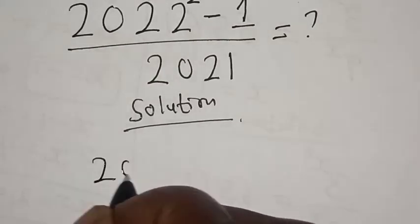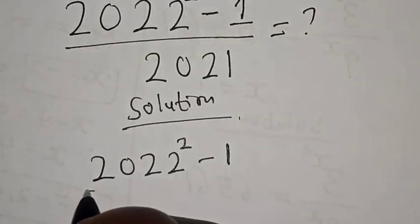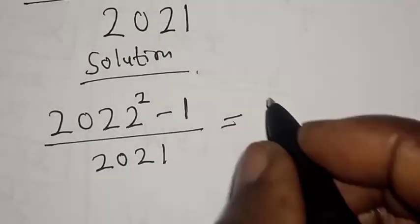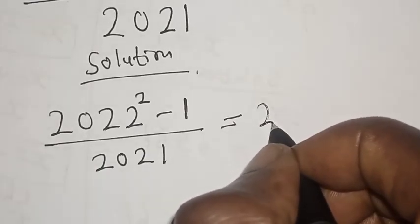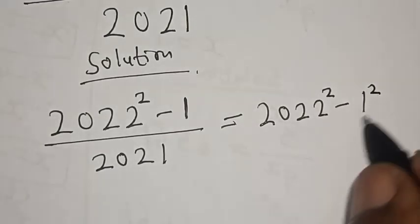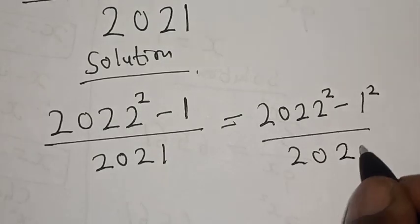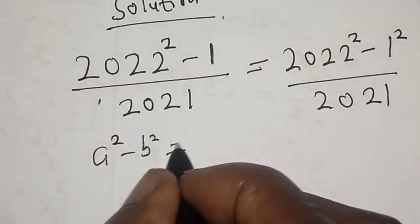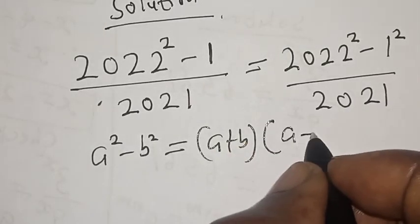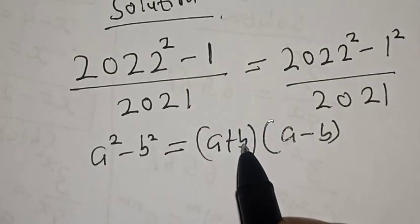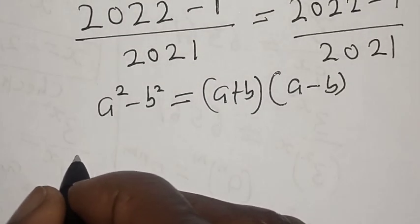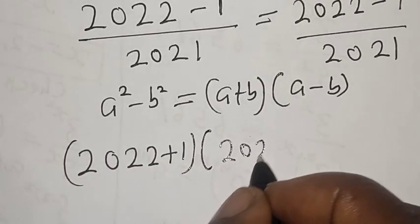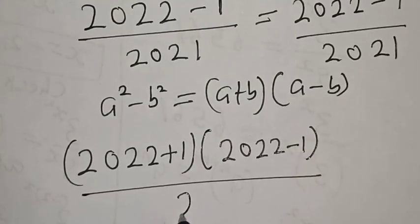We have 2022 squared minus 1 over 2021. Remember, 2022 squared minus 1 squared is a difference of two squares. If you have a squared minus b squared, this is equal to (a + b) multiplied by (a - b). Our a is equal to 2022 and b is equal to 1. So we have (2022 + 1) multiplied by (2022 - 1) over 2021.